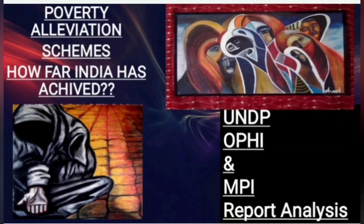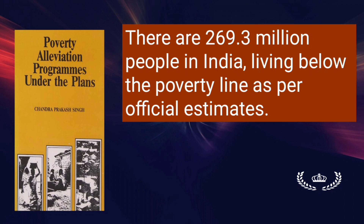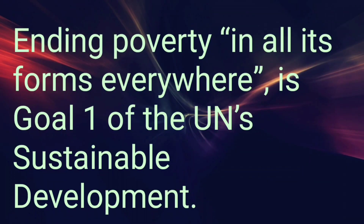Poverty Alleviation Schemes: How far has India achieved? There are 269.3 million people in India living below the poverty line as per official estimates. Ending poverty in all its forms everywhere is Goal 1 of the UN's Sustainable Development Goals.